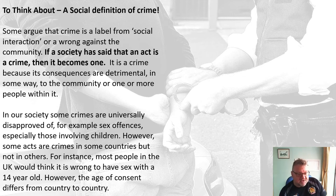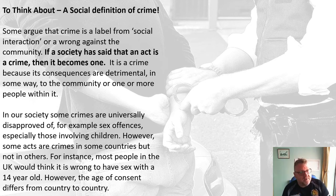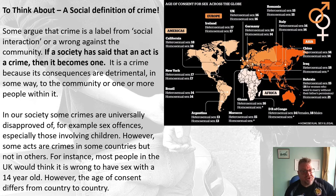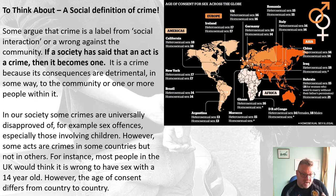Some crimes are universally disapproved of in our society — for example, sex offences, especially those involving children. However, some acts are crimes in some countries but not others. For instance, most people in the UK would think it's wrong to have sex with a 14-year-old, but the age of consent differs from country to country. Looking at various places around the world: in Argentina it's 13, Morocco it's 15 but not for homosexuals, Ghana it's 16, the Democratic Republic of Congo it's 14 for females and 18 for males, New York it's 17, Brazil it's 14. This just goes to show that laws are something that societies themselves make up.